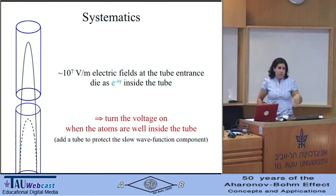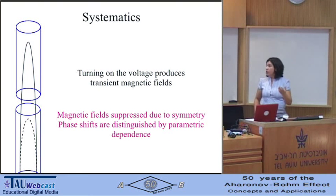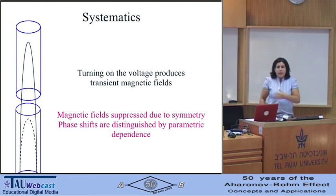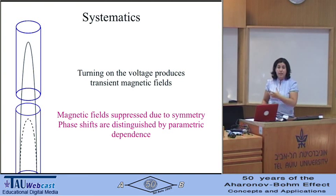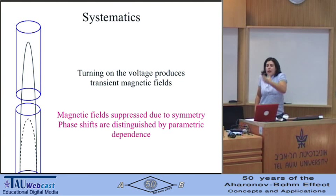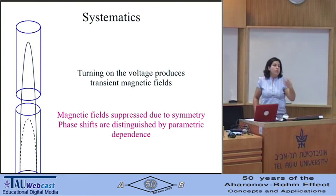I can add another tube to the lower component to get the same exponential screening effect. When I turn on the voltage, I will induce transient magnetic fields. Because of symmetry, I can arrange the configuration to suppress these. And even if I don't do it perfectly, the phase shift I measure depends in a specific way on the voltage and the control parameters of the experiment, so I can isolate it from any other phase shifts that would otherwise spoil the effect.